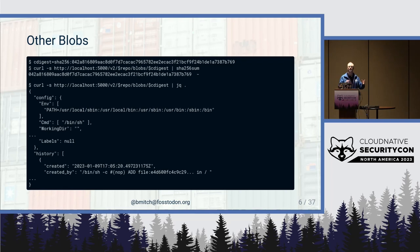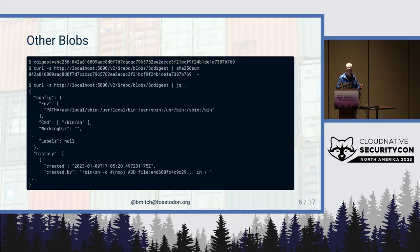These are each storage blobs. The registry doesn't care what they are — JSON, tar, binary, text, whatever — it takes whatever you want to throw in there as long as it maps to the digest of the string you gave it.